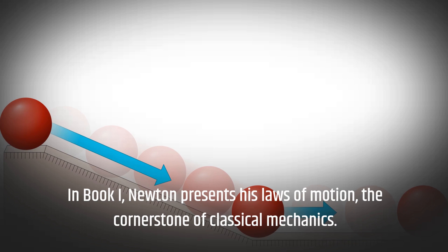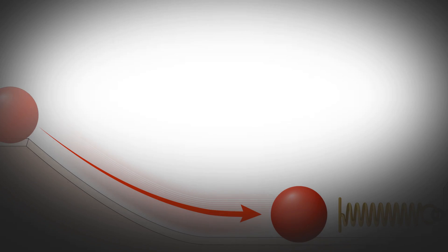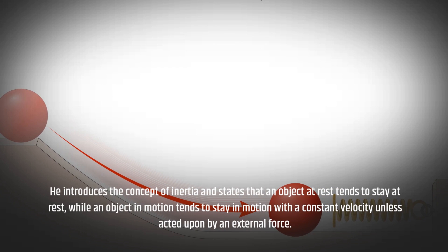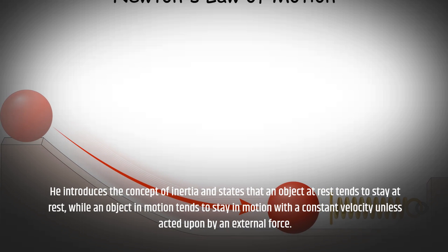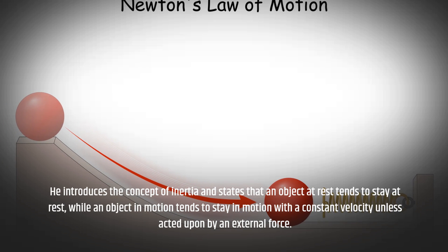In book one, Newton presents his Laws of Motion, the cornerstone of classical mechanics. He introduces the concept of inertia and states that an object at rest tends to stay at rest, while an object in motion tends to stay in motion with a constant velocity unless acted upon by an external force.